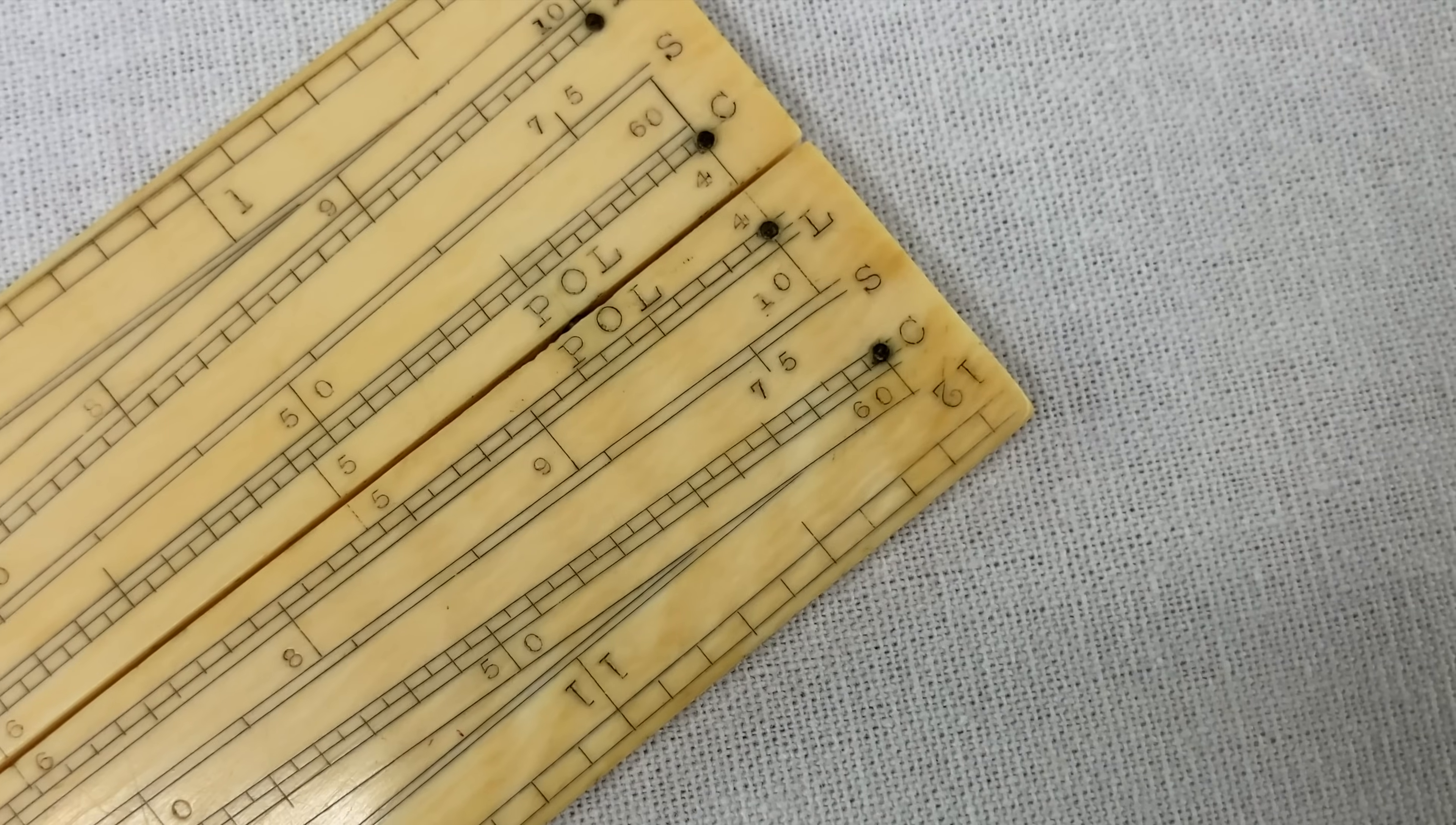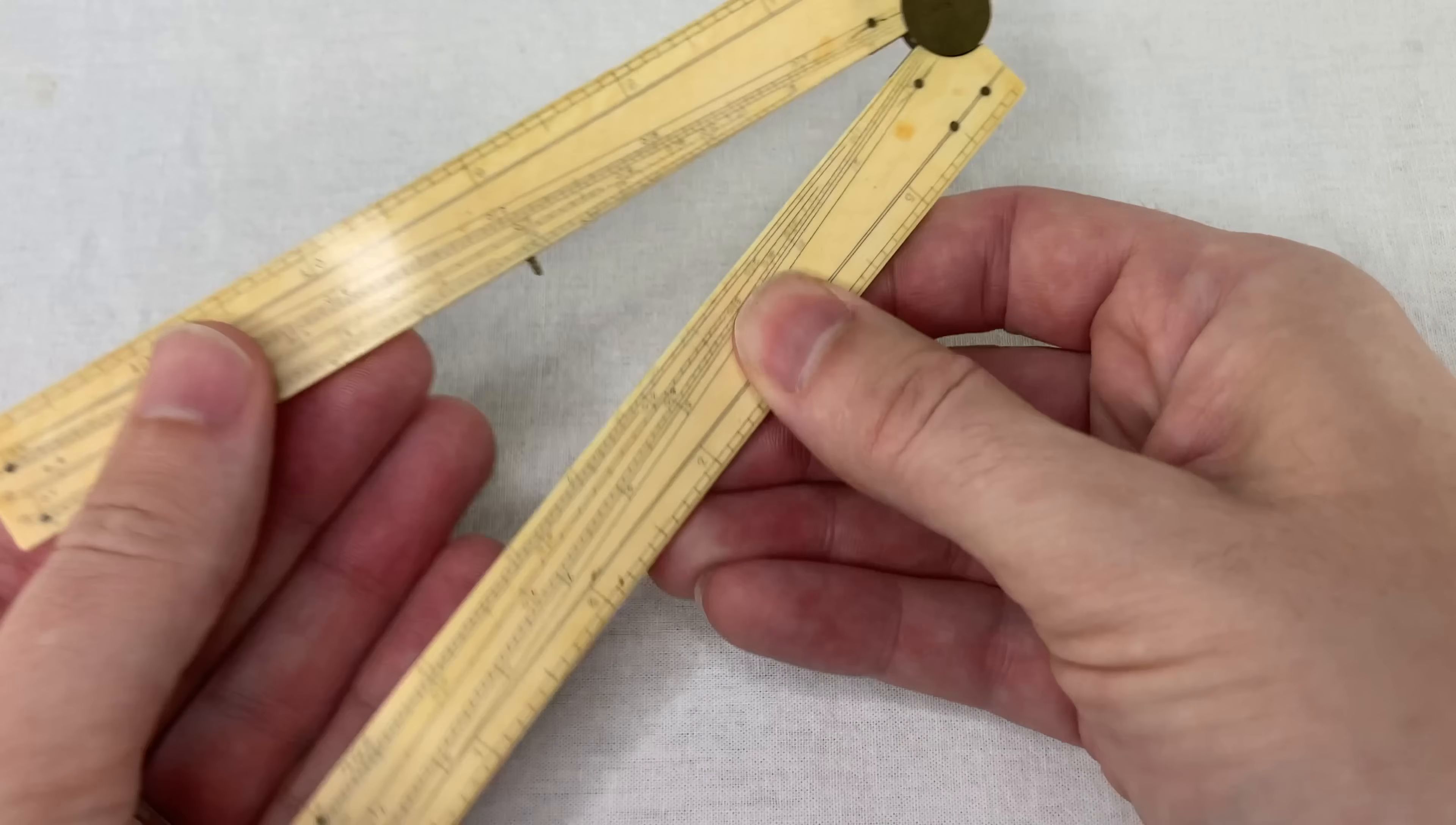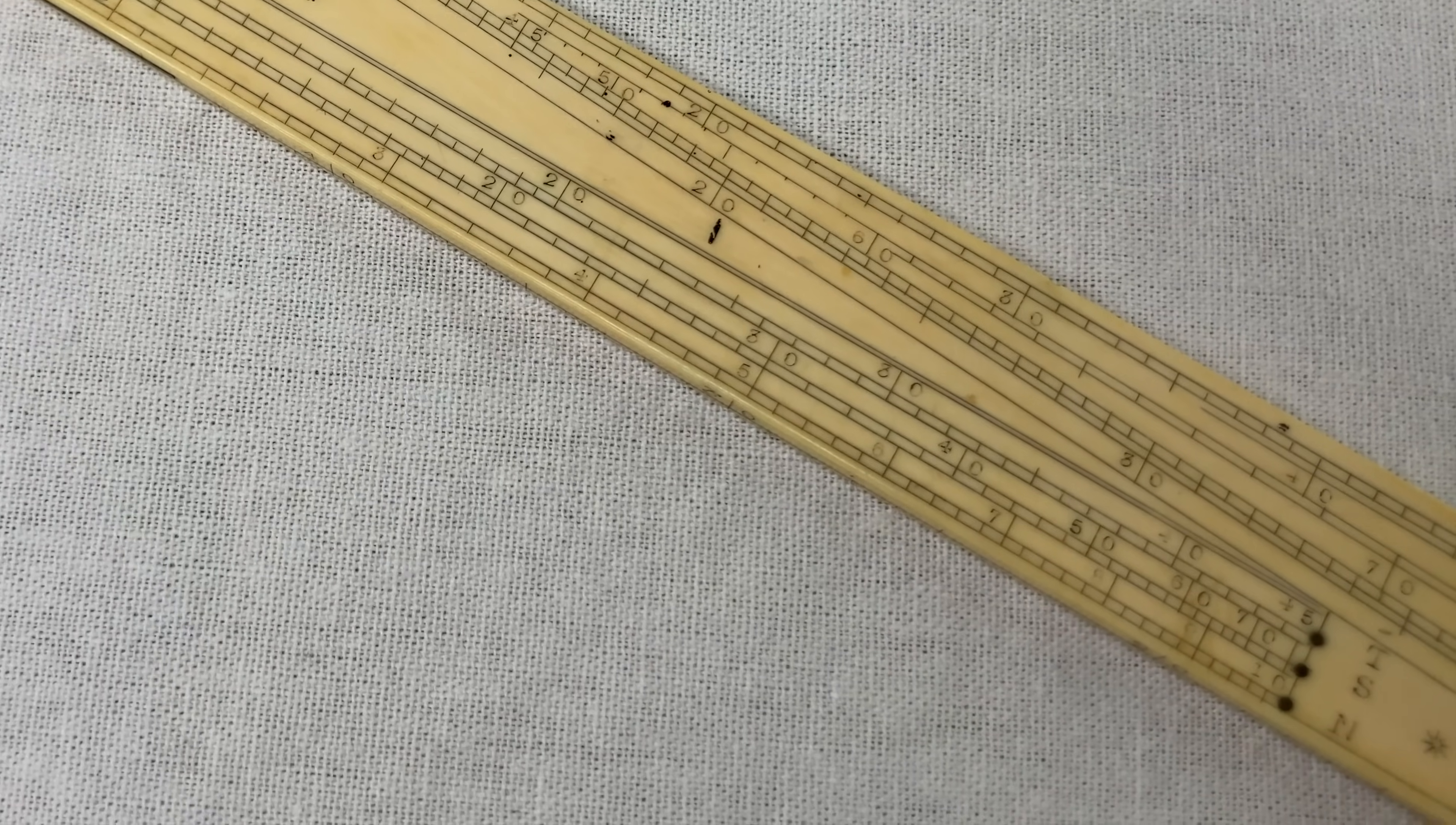It has two flat rectangles joined by this fancy hinge here. And look at all the scales! The L, the S, the C, and even more on the other side. Open it flat and you've got a normal ruler with 12 inches, and on the other side it's got a logarithmic scale.